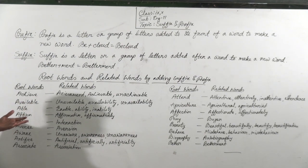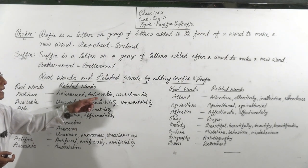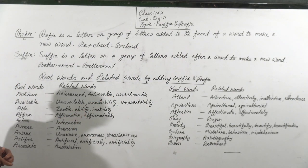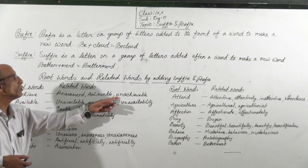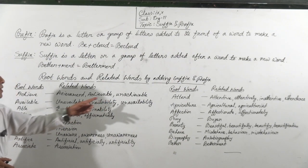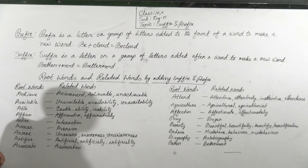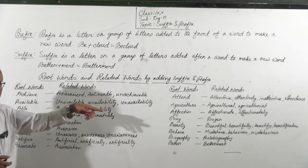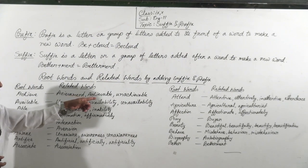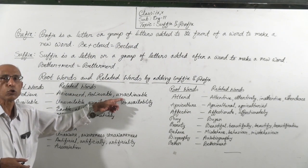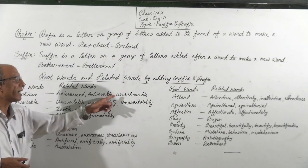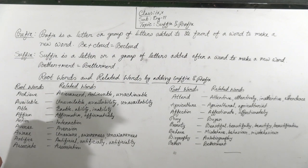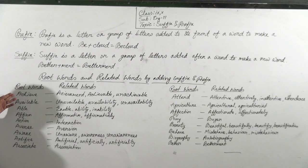It may be 'unachievable' — the opposite of 'achievable' is 'unachievable.' Here 'un' is added; 'un' is a prefix, and '-able' is a suffix. So 'achieve' may have related words: 'achievement,' 'achievable,' 'unachievable.' 'Achievement' is a noun, 'achievable' is an adjective, and 'unachievable' is also an adjective — the opposite of 'achievable.'